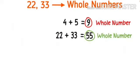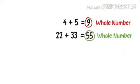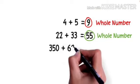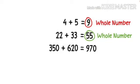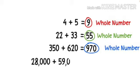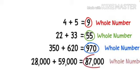Are you getting a gist of what I'm trying to say? Also if I add two whole numbers 350 and 620, the answer to that is again a whole number. Similarly, 28,000 plus 59,000 also result in a whole number.